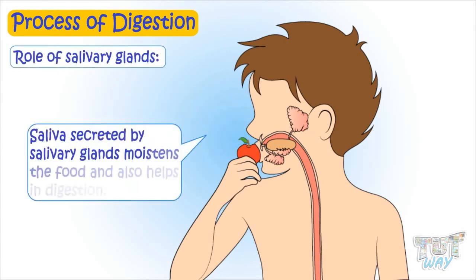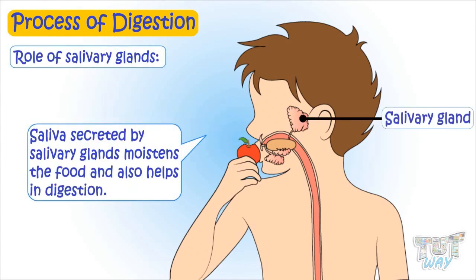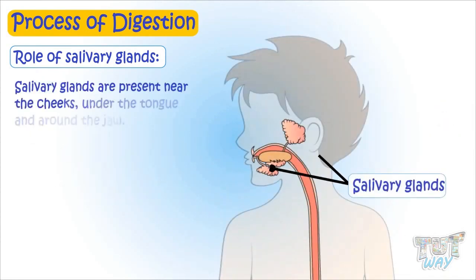Saliva secreted by salivary glands moistens the food and also helps in digestion. Salivary glands are present near the cheeks, under the tongue, and around the jaw.